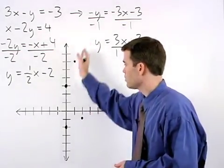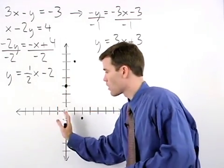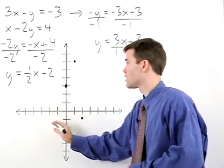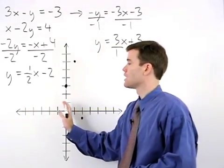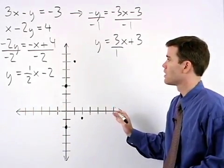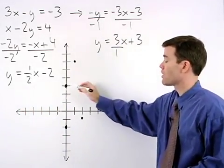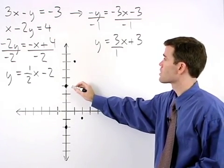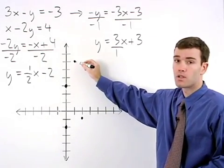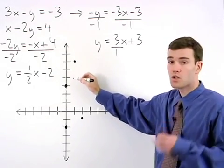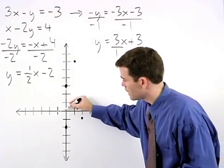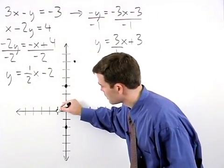Notice that our two lines are going to intersect somewhere to the left of the y axis. So we need points to the left of the y axis instead of the right. So for our first equation, instead of using our slope of 3 over 1 to go up 3 and to the right one to plot a point, let's go in the opposite direction with our slope. Down 3 and to the left one to plot a point.